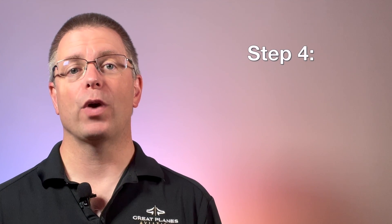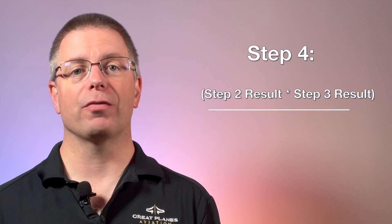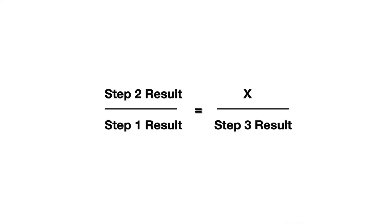In step 4, we'll use the equation: step 2 result times step 3 result divided by step 1 result. This equation is just a shortcut. Normally, to solve this problem, we'd set up a ratio: step 2 result over the step 1 result equals x over the step 3 result. Then we'd cross multiply to get: step 2 result times step 3 result equals step 1 result times x. Finally, dividing both sides by the step 1 result leaves: step 2 result times step 3 result divided by step 1 result equals x.